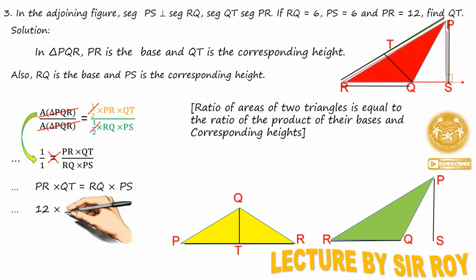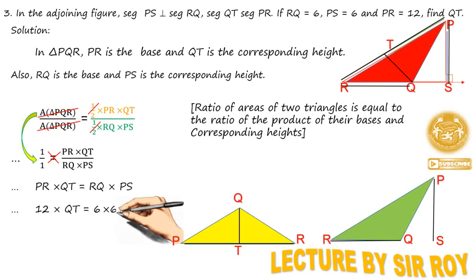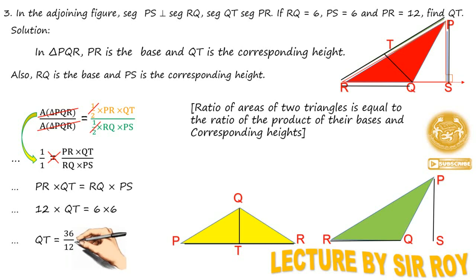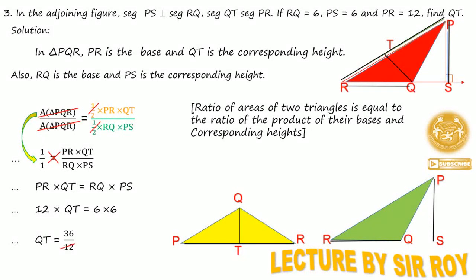PR × QT = RQ × PS। Substituting values: 12 × QT = 6 × 6 = 36। So QT = 36 / 12 = 3। Finally, QT = 3 centimeters।